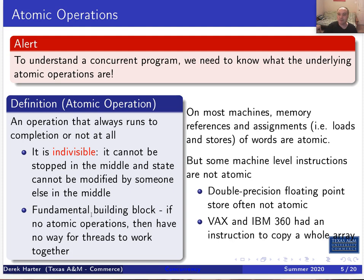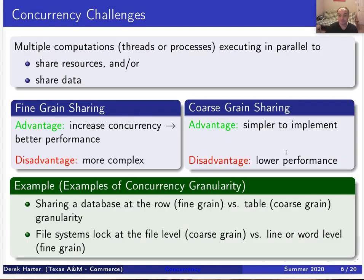Atomic operations provide the building blocks from which we build concurrent mechanisms — mechanisms to handle concurrency correctly. On most machines, machine instructions are atomic, or at least most of them are. We're going to start talking about loads and stores: when you load a value from memory into a register, or store a value from a register back into memory, those happen atomically — the machine instruction will execute completely or not at all.